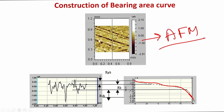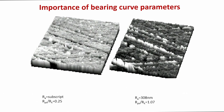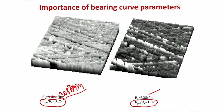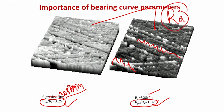AFM — atomic force microscopy — gives very high resolution, down to micron scale and even lower, and from it you can find the valley roughness, peak roughness, and mean roughness of the surface. One important use of the bearing area ratio curve: suppose two surfaces both have Ra = 308 nanometers — the Ra values are the same. But if you consider the ratio of peak roughness Rpk to mean roughness Rk from the bearing area curve, one surface is less rough and the other is more rough, even though the Ra values are identical.